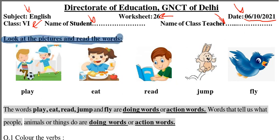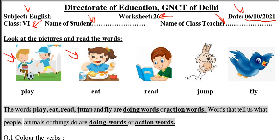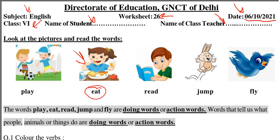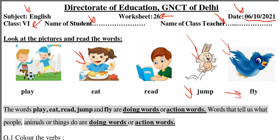Look at the pictures and read the words. There are pictures given — you can see this one, and this, and this. The first picture shows 'plays' — you can see two boys playing football. This girl over here is eating, so the verb is 'eat.' The boy in this picture is reading a book, so the verb is 'read.' Over here you can see 'jump' — this is a rabbit and he is jumping. Then 'fly' — a bird is flying over here.